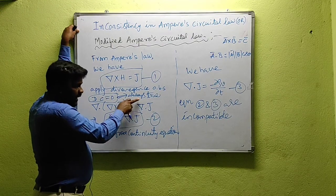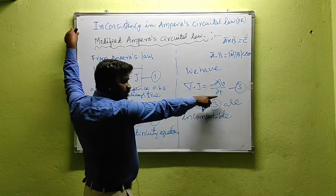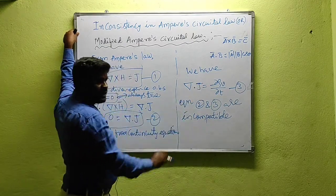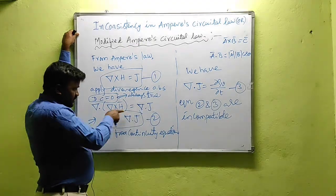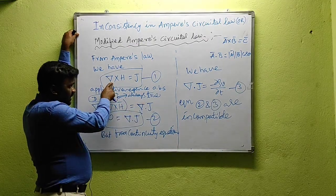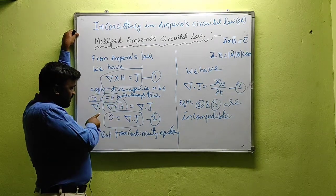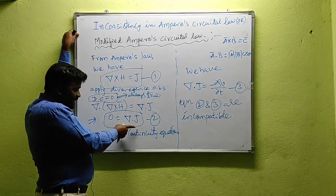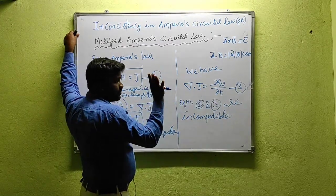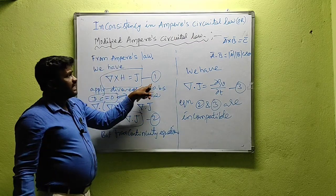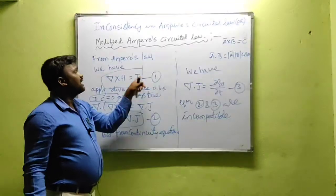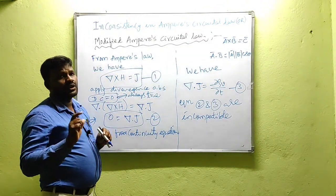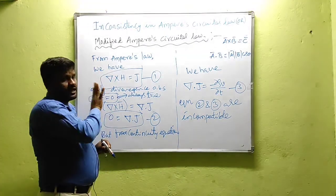We know that del dot J equals minus ∂ρv/∂t, that is the continuity equation. From that, del dot J is a non-zero quantity. But if I apply divergence to del cross H on both sides, on the left hand side I will get del dot (del cross H) equal to 0. But del dot J should be non-zero. So that is why we need to modify equation 1, which we got from Ampere's Circuit Law.